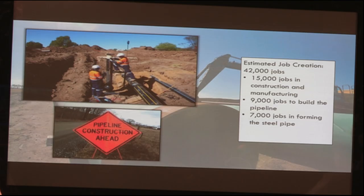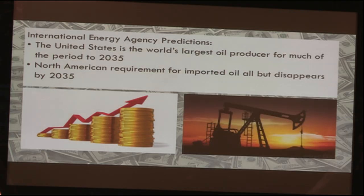Looking at the upsides of the Keystone Pipeline, the major argument is job creation. In a two-year span, it would create 42,000 jobs — 15,000 in constructing and manufacturing, 9,000 in building the pipeline, 7,000 in forming steel pipe, and the rest through indirect means such as food service. By 2035, the Canada Research Institute puts that number at about 117,000 jobs created. The pipeline would also stimulate the economy by adding $3.4 billion and saving the U.S. $9.1 billion in crude oil costs per year. It would also help make North America energy independent.